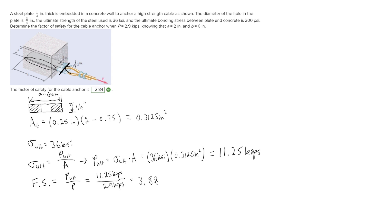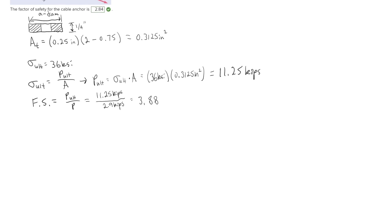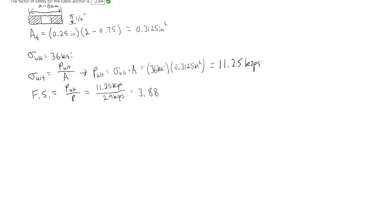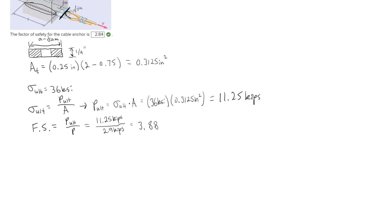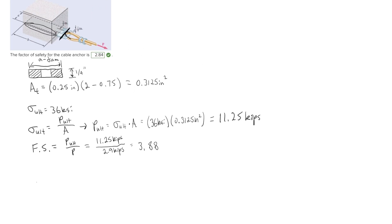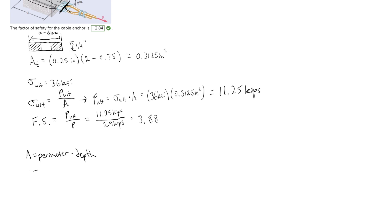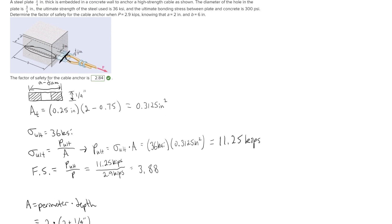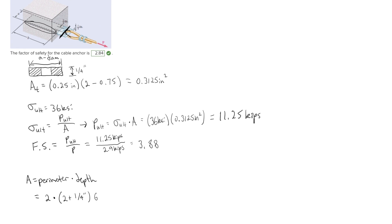Now we need to check the second scenario: shearing in the concrete, which would occur if you pulled hard enough and the anchor pulled out through the concrete and failed in shear. For that we need to find the area between the plate and the concrete slab, which is the perimeter times the depth. That is 2 times (2 plus 0.25) inches times the depth b, which is 6 inches, giving an area of 27.0 inches squared.